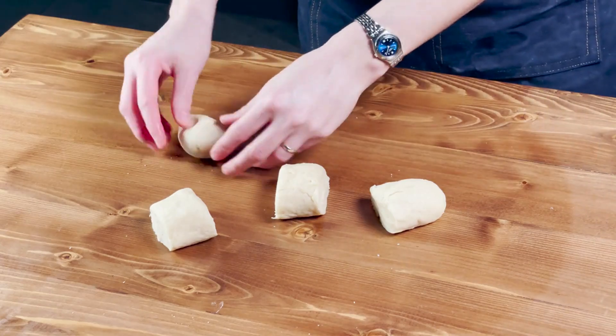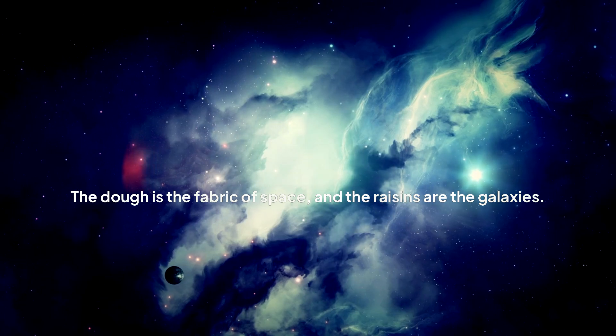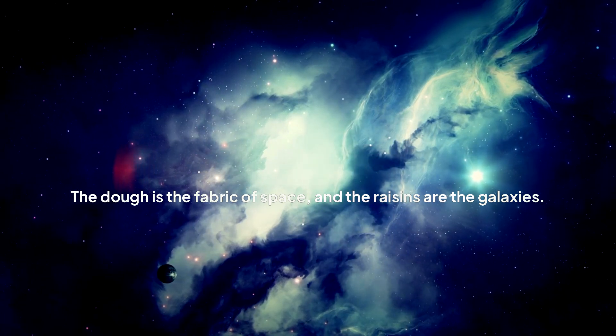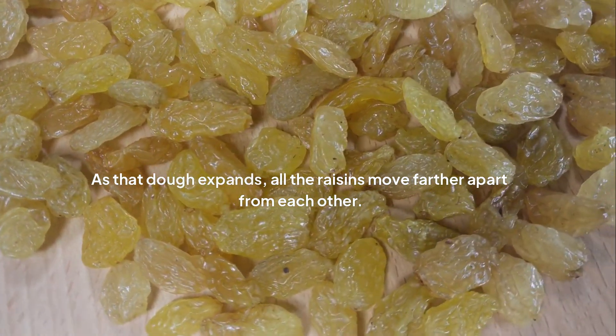The best way to picture this is to think of a loaf of raisin bread baking in an oven. The dough is the fabric of space, and the raisins are the galaxies. As that dough expands, all the raisins move farther apart from each other.